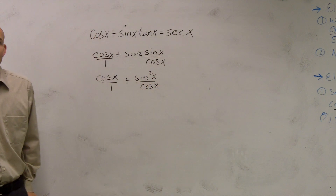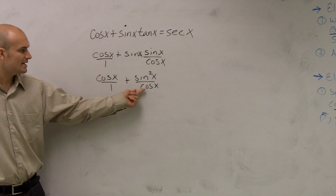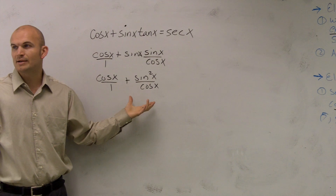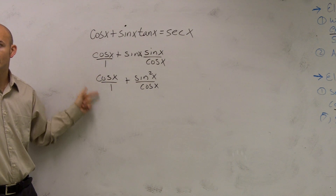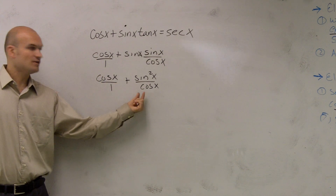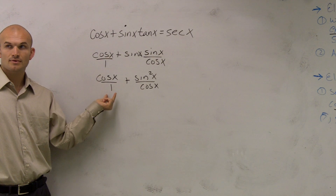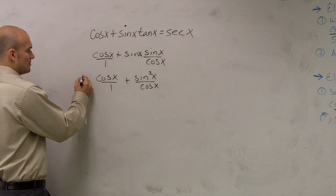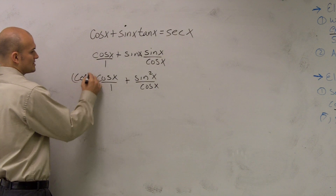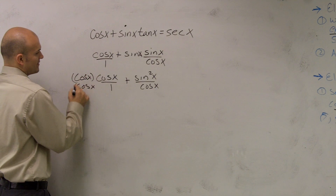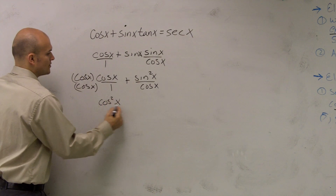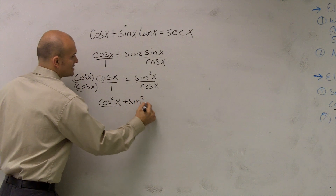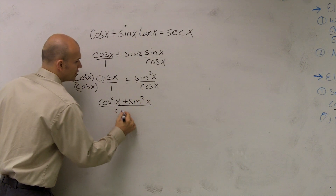The reason I'm doing this is because now I can get these as the same denominators. To get the same denominator as cosine, I'll multiply by cosine over cosine. So multiplying cosine of x over cosine of x gives me cosine squared of x plus sine squared of x, all over cosine of x.